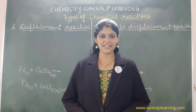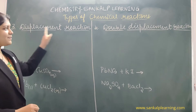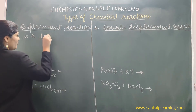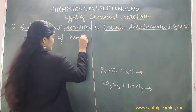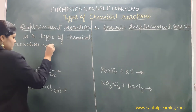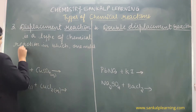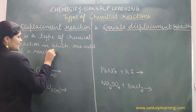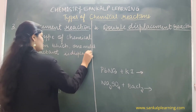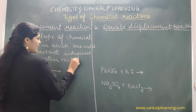Now let us study the third type of chemical reaction, which is displacement reaction. Displacement reaction is a type of chemical reaction in which one metal of a reactant is displaced by another metal — one metal is displaced by, or replaced by, another metal.